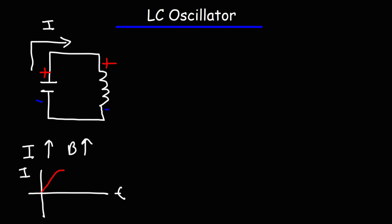Now during the second part of this LC circuit, the current will decrease. When the current decreases, the magnetic field inside the inductor begins to collapse. It decreases.